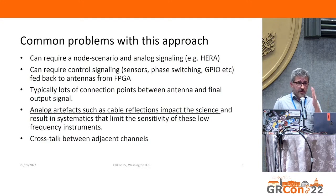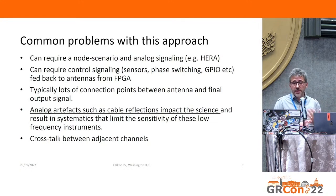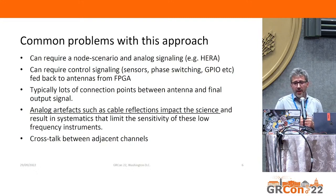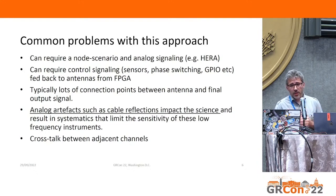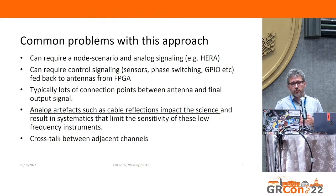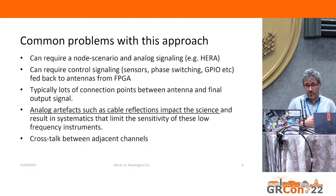The common problems with this architecture are that it often requires some kind of node scenario and analog signaling. Many systems require control up front — for HERA, we have lots of sensors in the feed, phase switching, and GPIO needed to switch on attenuation. All of this has to be fed back from the processing platform. There are lots of connection points between the antenna and the final output signal. More importantly for the science, analog artifacts — cable reflections in particular — really impact sensitivity. Even RFoF connections, at integration levels of 10^-5 or 10^-6, show those effects. Cross-talk between channels is also an issue.